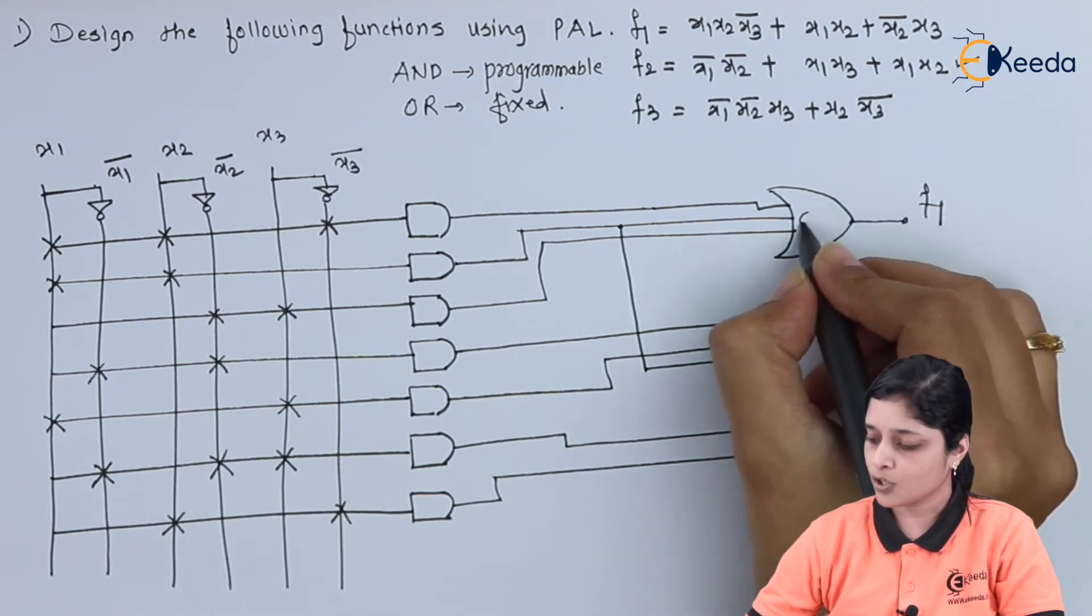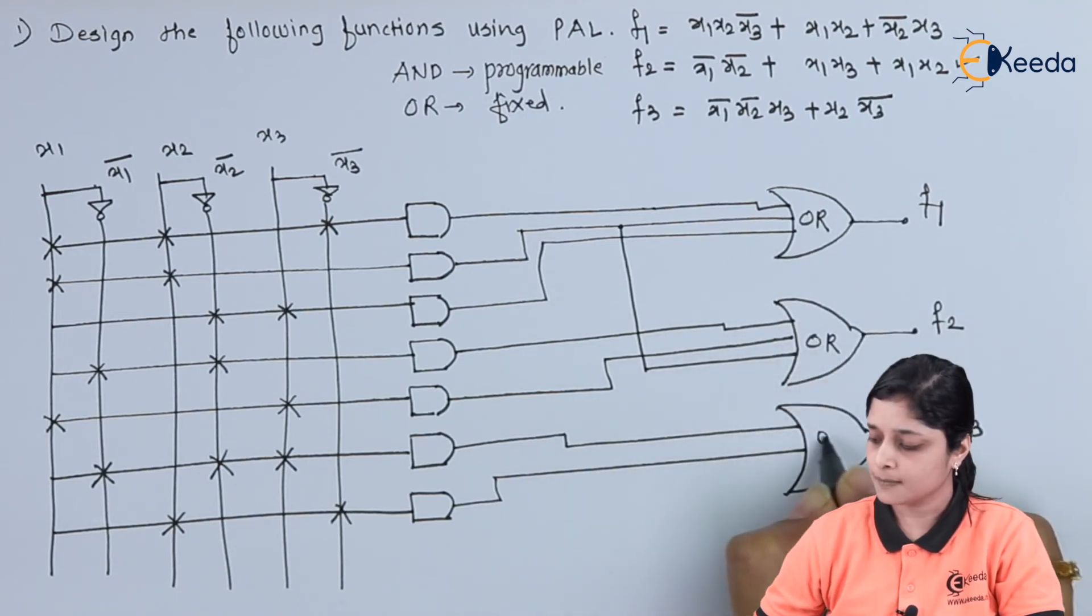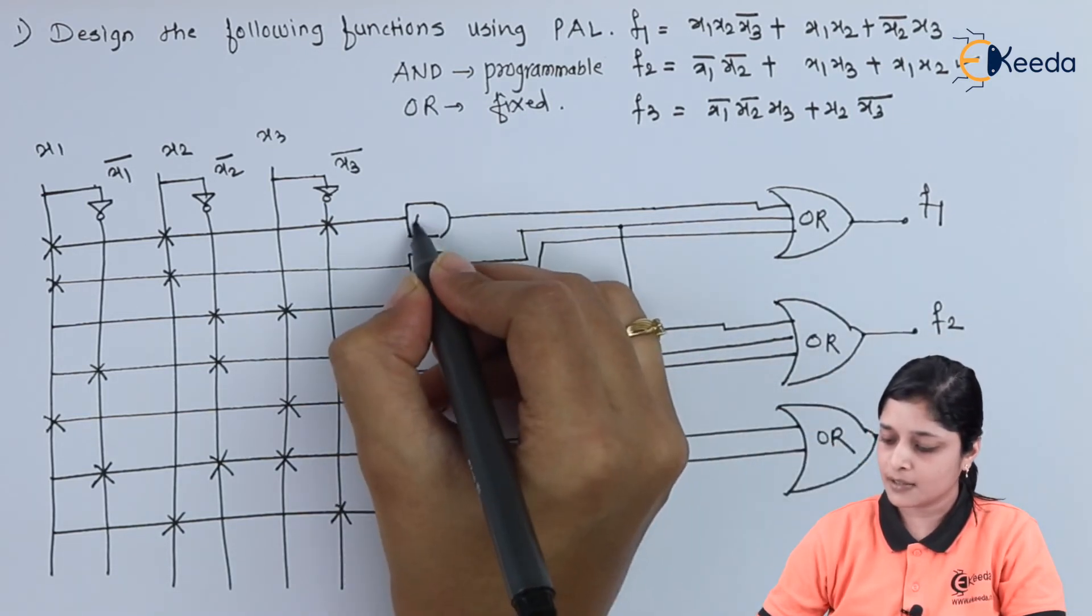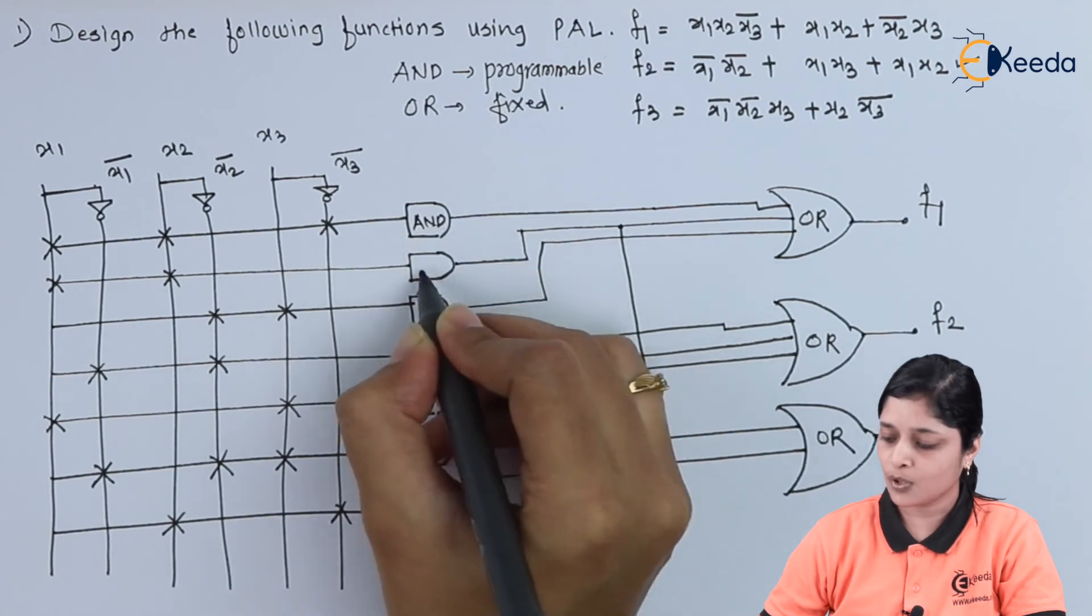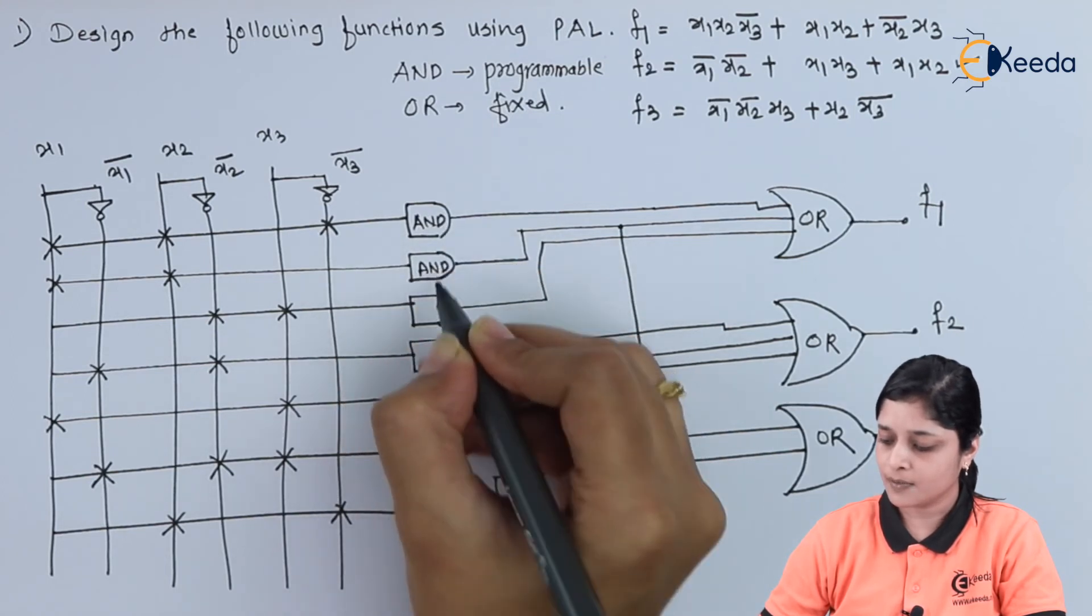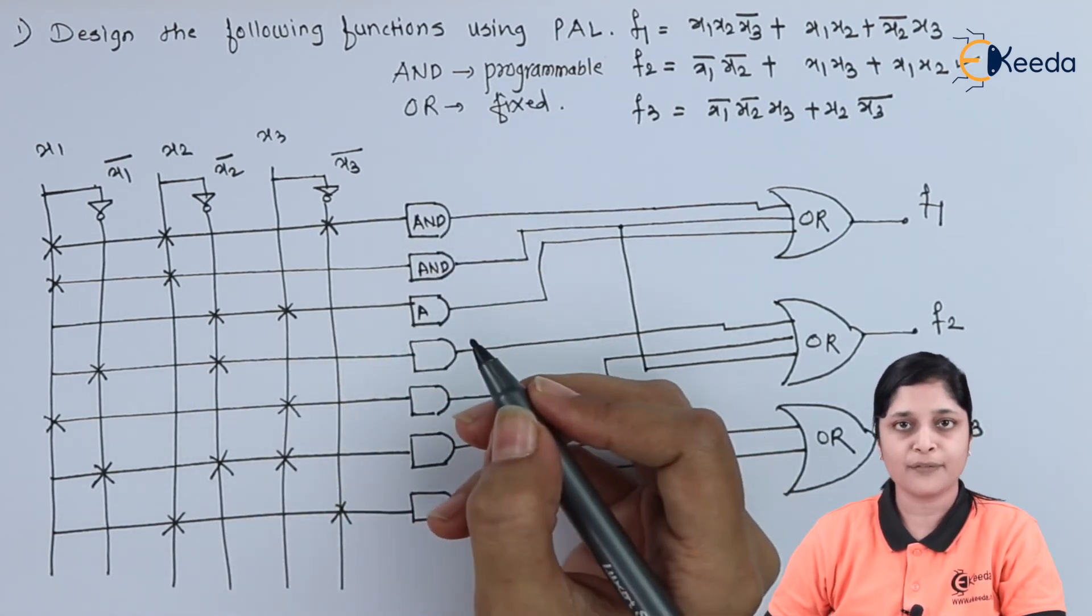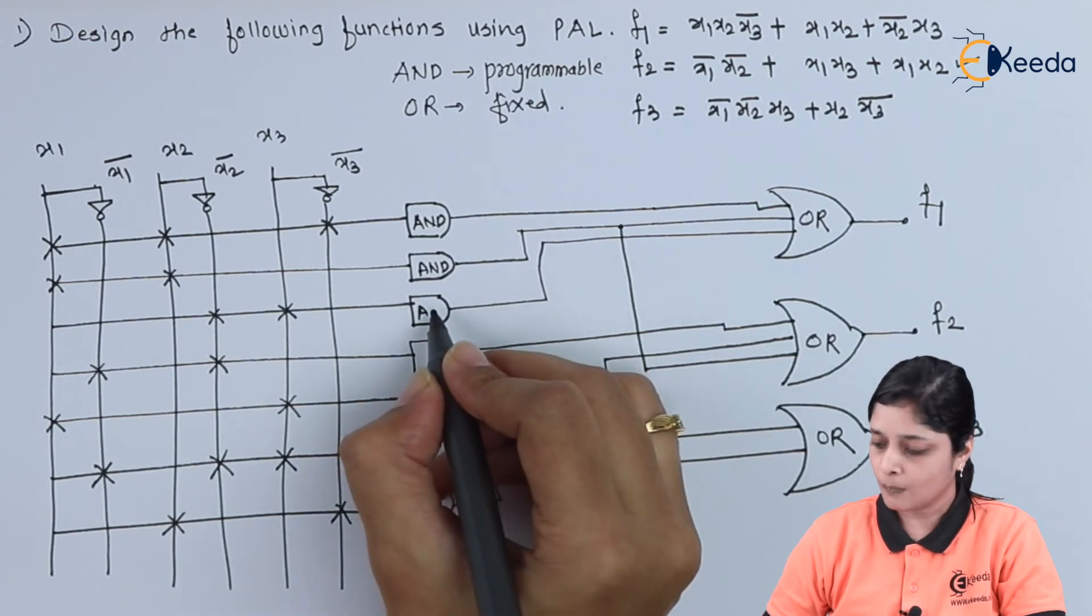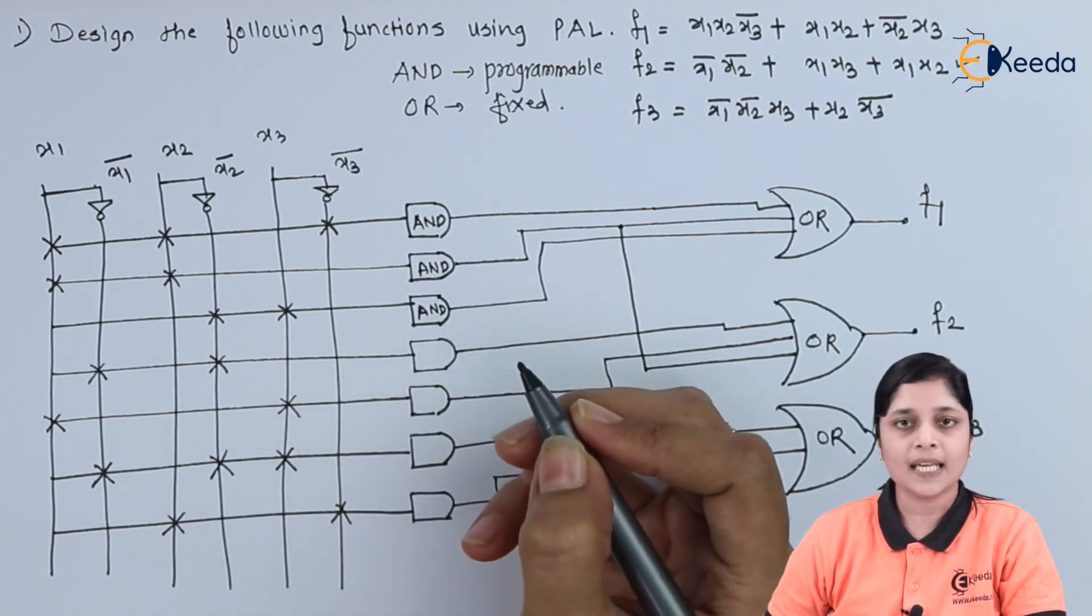So this is the structure for fixed OR gate and this is the structure for programmable AND gate. So in this way, we have achieved implementation using PAL.